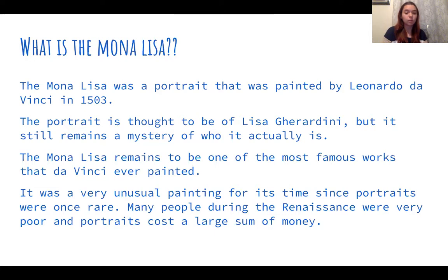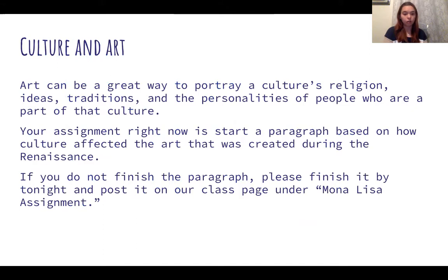The Mona Lisa remains one of the most famous works that da Vinci ever painted. It was a very unusual painting for its time, since portraits were once rare. Many people during the Renaissance were very poor, and portraits cost a large sum of money. Art can be a great way to portray a culture's religion, ideas, traditions, and the personalities of people who are part of that culture. We learned today how the Mona Lisa was made during a time of cultural rebirth, where portraits were very rare and quite expensive.